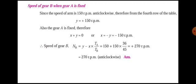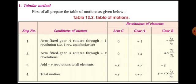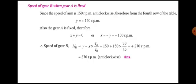Now find the speed of gear B from the table column: y minus x into Ta over Tb. Substituting x equals minus 150 and y equals 150, we get the speed of gear B equals plus 270 RPM. So gear B runs at 270 RPM in the anti-clockwise direction.